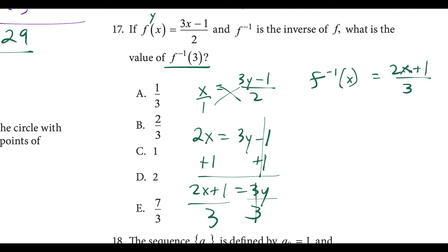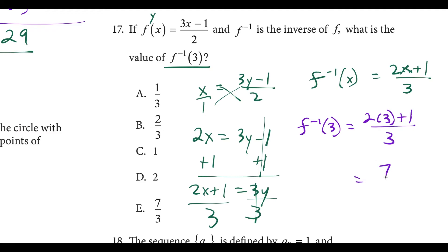To find f inverse of 3, we plug 3 into the inverse function: 2 times 3 plus 1 over 3, which simplifies to 7 over 3. This matches choice E.